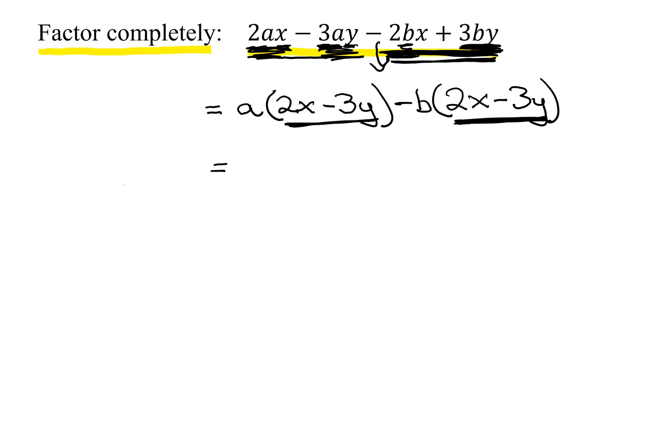And so that is my common binomial factor. So I have 2X minus 3Y is my common factor that I pulled in front. And what's it going to leave behind? A minus B.